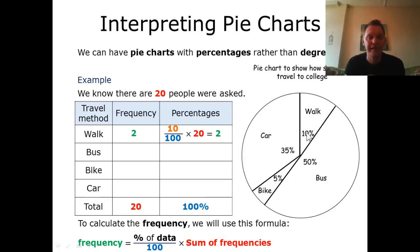So for our first one is 10, divide that by 100 times by 20 gives me two. So two people said that they walked to college. These results will be the exact same because I've used the exact same data, just using percentages rather than degrees.